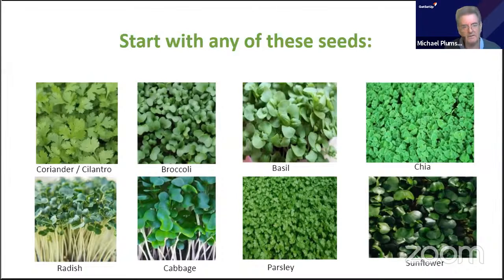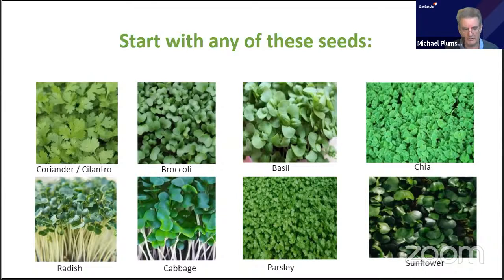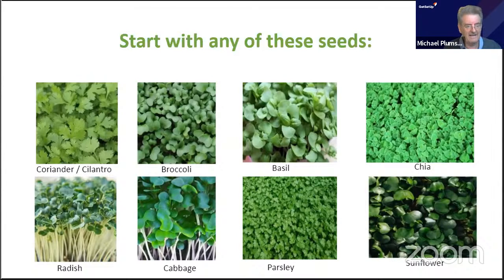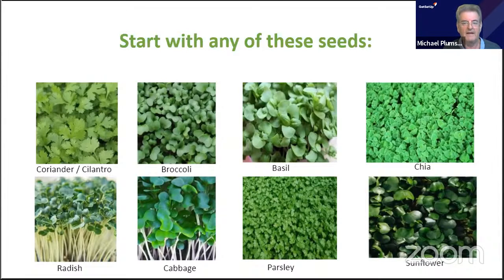As soon as a microgreen gets a green leaf and gets light or sun, the chlorophyll reacts with the light and produces other nutrients, making the microgreen even more nutritious than it was as a sprout. Chlorophyll is also a natural deodorant — if you've got bad breath, you can blend microgreens into a drink and that will sort out any odors.